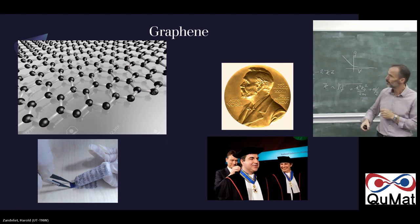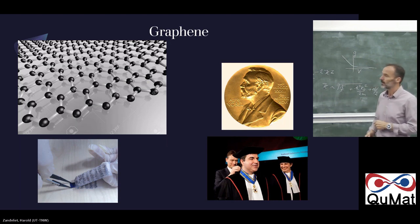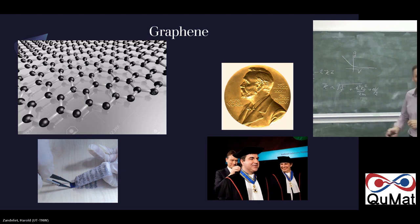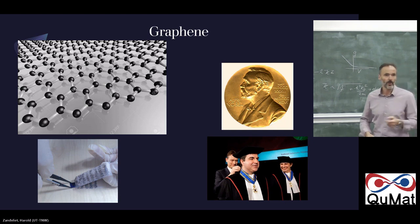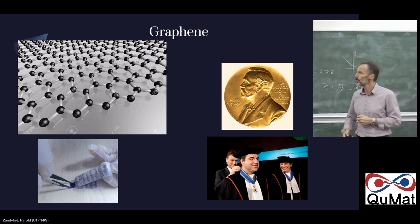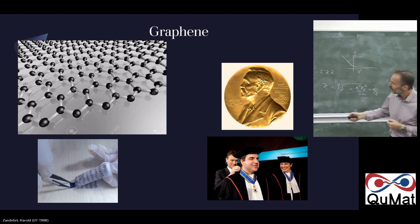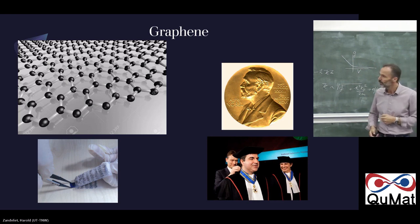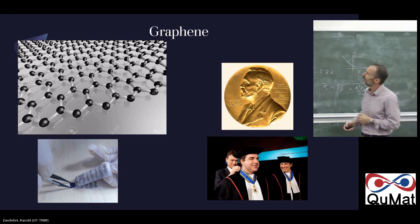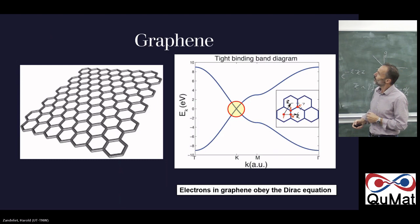Geim and Novoselov got the Nobel Prize — I think it was 2009 or 2010 — because they were the first to isolate a completely single layer of graphene. This was quite a surprise because from the viewpoint of thermodynamics, based on the Mermin-Wagner theorem, you would not expect such a layer to be stable. But they showed that a 2D layer is stable.